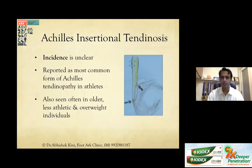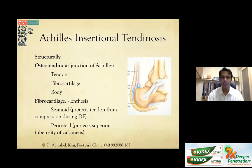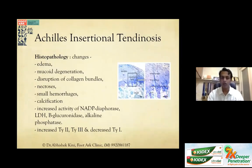The incidence of insertional tendinosis is unclear but it is reported as the most common form of Achilles tendinopathy. It is also seen in older, less athletic, overweight individuals, and especially in diabetics. Structurally, it is an osteotendinous junction with tendon, fibrocartilage, and the calcaneum body — the fibrocartilage acts like an enthesis sesamoid protecting the tendon during dorsiflexion. Histopathologically, there is mucoid degeneration, collagen disruption, necrosis, small hemorrhage, calcification, and increased enzymatic activity, indicating degeneration rather than just inflammation.